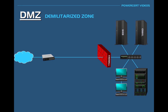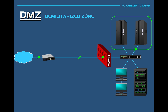Let's do an example. Here we have a network that belongs to a company, and this company has computers and servers that are behind a firewall. In this company, we have servers that need to be accessed by people from the internet so that the company can stay in business — for example, a web server and an email server.